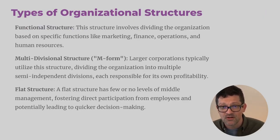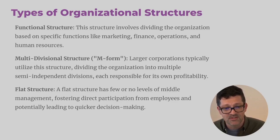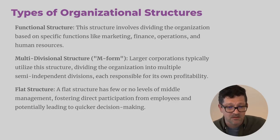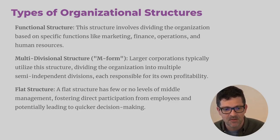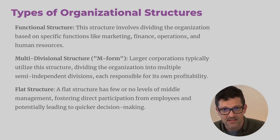Here are some other organizational structures that might be good to think about. There's the functional structure — the most basic one. There's the multi-divisional structure, the M form — for larger corporations dividing into multiple semi-independent divisions, each responsible for its own profitability. If you're a large organization over 500 workers or more, that might be something to look at. There's also a very flat structure, which has very few or no levels of middle management.